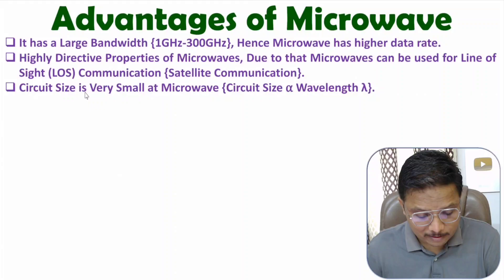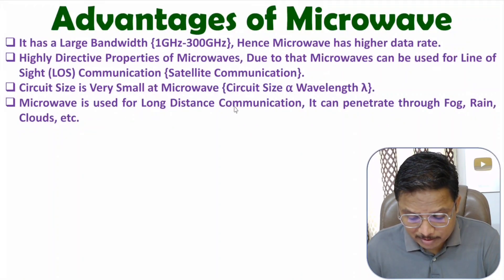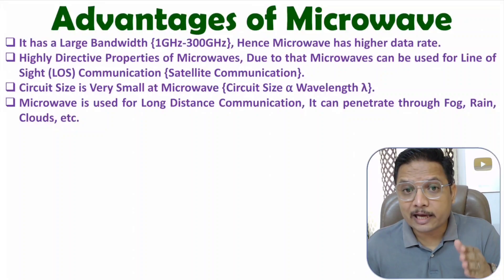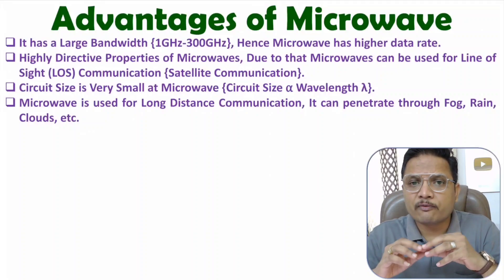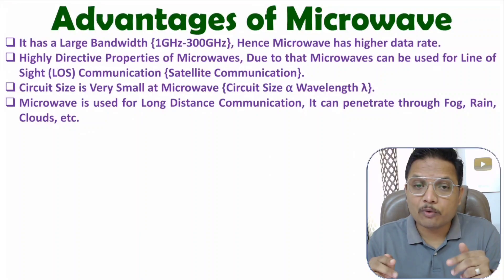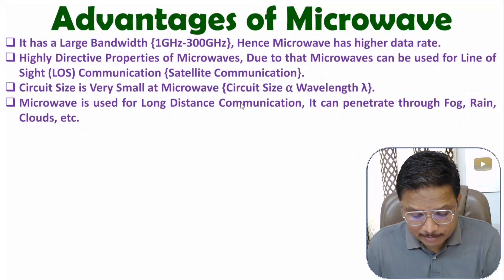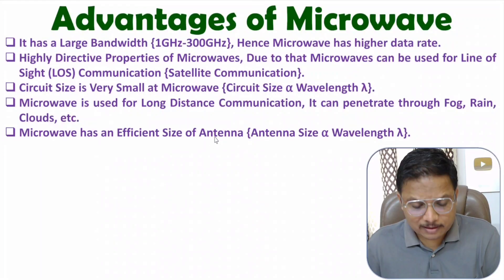The next advantage is based on the distance of microwave communication. Microwave is used for long-distance communication and it can penetrate through fog, rain, and clouds. Because of its highly directive property and ability to penetrate through various weather conditions, one can communicate irrespective of weather using microwave. Long-distance communication applications include communicating with satellites.